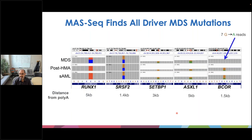What's particularly interesting is that although the BCOR mutation was only observed post-therapy, we are able to identify rare mutations within this gene at that exact position that corresponds to the later therapy-resistant malignant clone — a clone that only arises and is detected post-therapy.